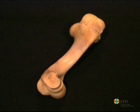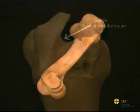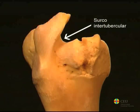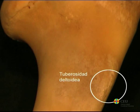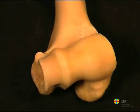The humerus of ruminants, large or small, is proportionally more robust and more rugged. In the groove located between the major and minor tubers, the intermediate tubercle seen in equines does not appear. In addition, the greater tubercle is very prominent and slopes slightly towards the minor tubercle. The deltoid tuberosity is not as defined as in equines, and the trochlea forms a more oblique angle with the longitudinal axis of the body.